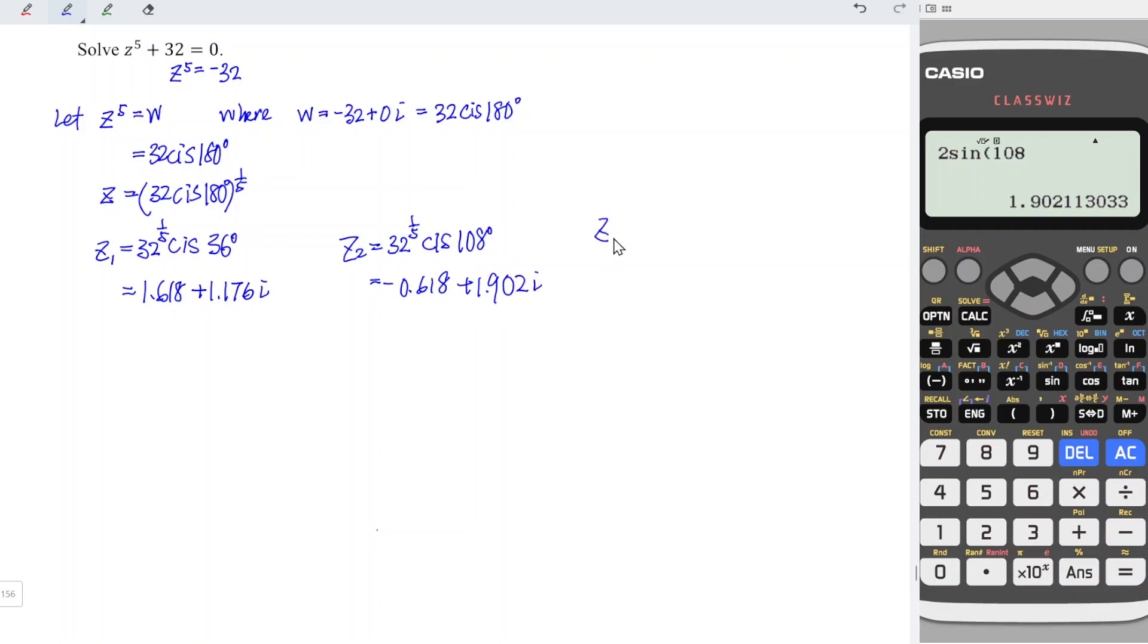Next, we have z3. So again, 32 to the power of 1 over 5 cis. Now we should take 108, again, plus 72, which is plus 72, since 360 degrees is shared evenly by these 5 roots. So we have 180 degrees. Which means that we should obtain negative 2.